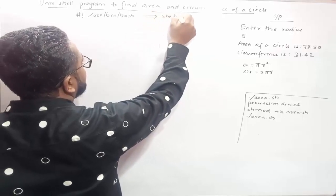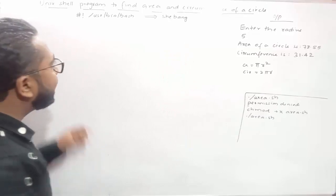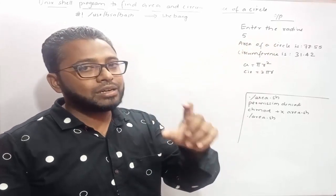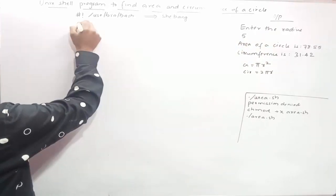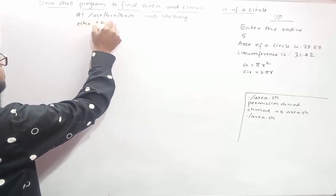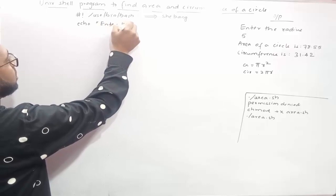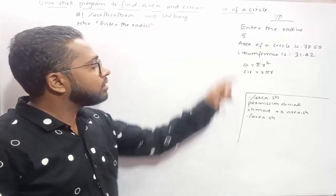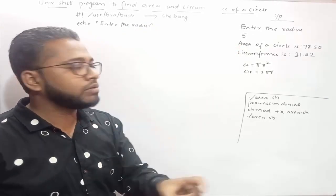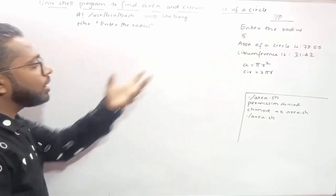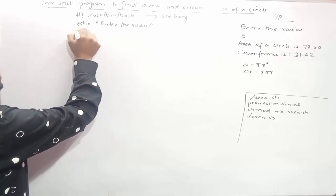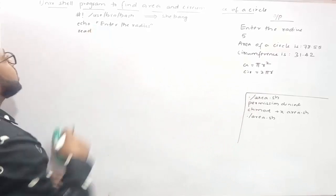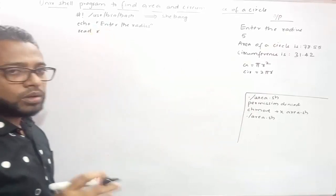Next we need to write a message to prompt the user. We use the echo command: echo "Enter the radius". After seeing this message the user will enter 5, so we need a variable to hold that value. To accept the value from the user we use the read command: read r.